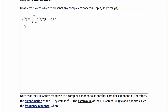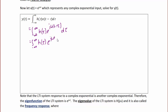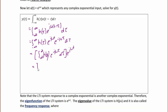Now let x(t) = e^(jωt), representing any complex exponential input to an LTI system, and solve for y(t) using convolution: y(t) = ∫_{-∞}^{∞} h(τ) x(t−τ) dτ. So y(t) = ∫_{-∞}^{∞} h(τ) e^(jω(t−τ)) dτ, which equals ∫_{-∞}^{∞} h(τ) e^(jωt) e^(−jωτ) dτ. We define H(jω) from this integral and multiply by e^(jωt), giving y(t) = H(jω) e^(jωt).